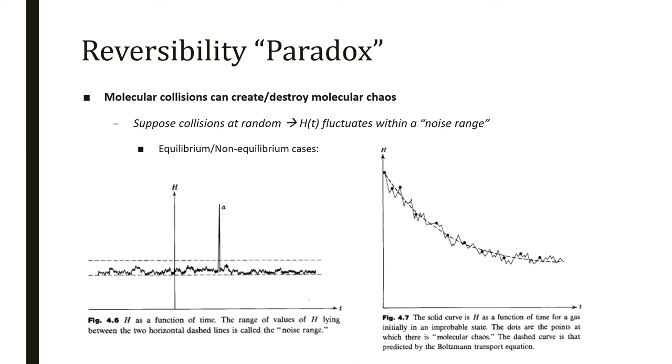On the right, we have now a situation where the gas is not in equilibrium. We have a dashed curve governed by the transport equation, and we can see by this dashed curve that H goes lower than or equal to zero. H, actually the solid line, will fluctuate around this average. So the transport equation sets an average, and the H theorem shows that the functional will fluctuate around it.